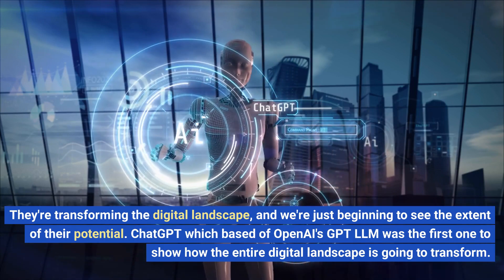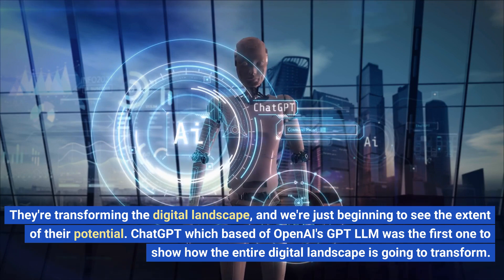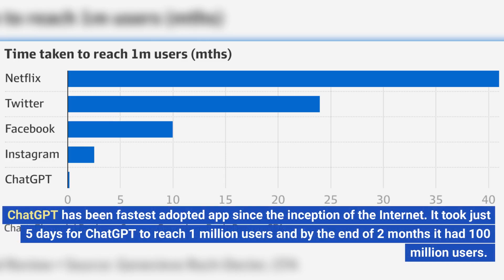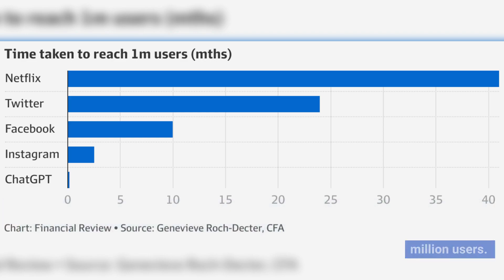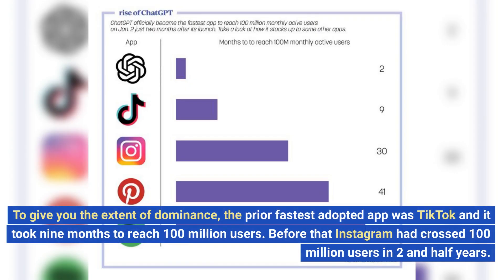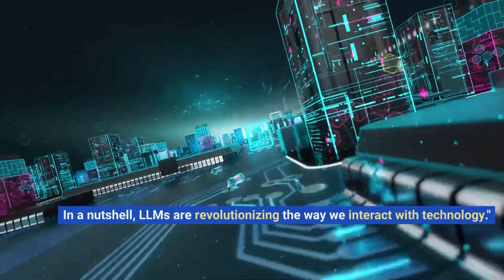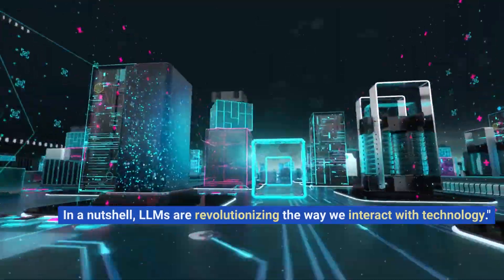ChatGPT, which is based on OpenAI's GPT LLM, was the first to show how the entire digital landscape is going to transform. ChatGPT has been the fastest adopted app since the inception of the internet. It took just 5 days for ChatGPT to reach 1 million users, and by the end of 2 months it had 100 million users. The prior fastest adopted app was TikTok, which took 9 months to reach 100 million users. Before that, Instagram crossed 100 million users in 2 and a half years. In a nutshell, LLMs are revolutionizing the way we interact with technology.